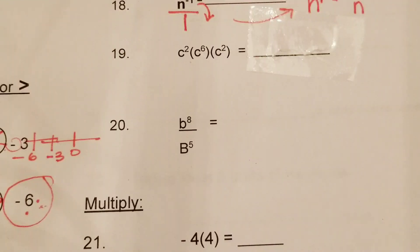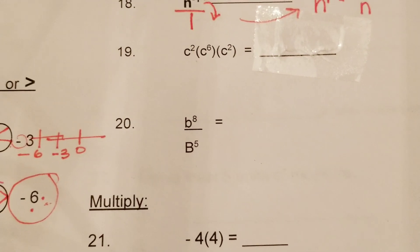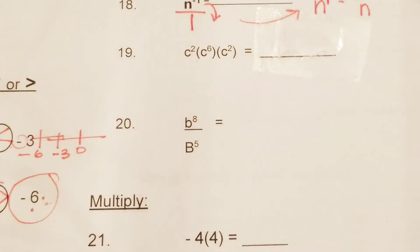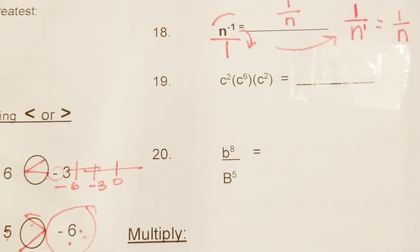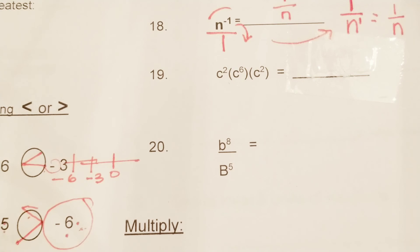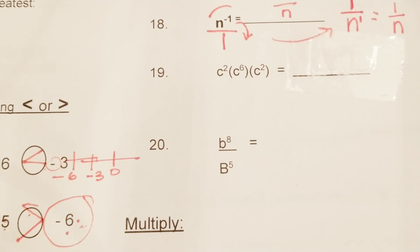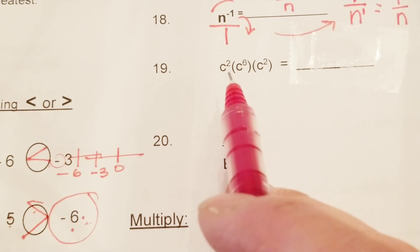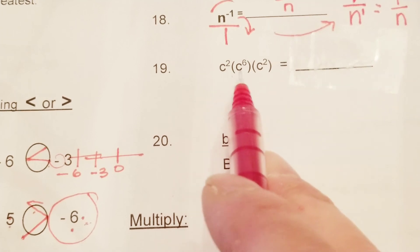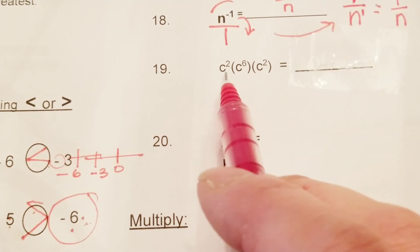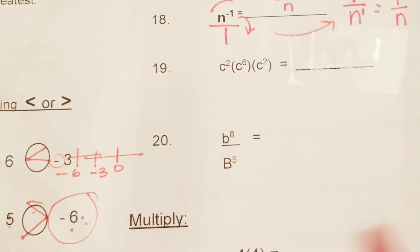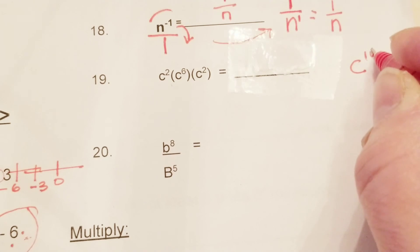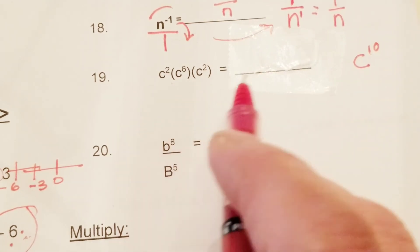Anyway, back to math. Sorry about that. So let's look at number 19, that's where we left off. Number 19 is a multiplication problem — the parentheses signify multiplication. The variable here is the same, so you'll keep the base and then you add the exponents: 2 plus 6 is 8, 8 plus 2 is 10 — c to the 10th power.